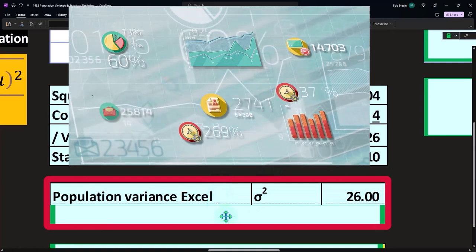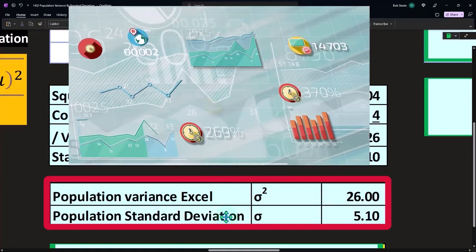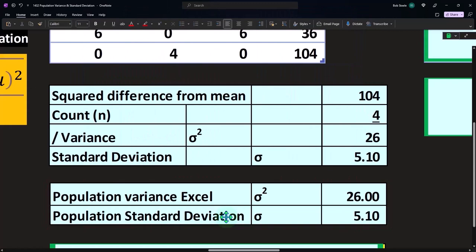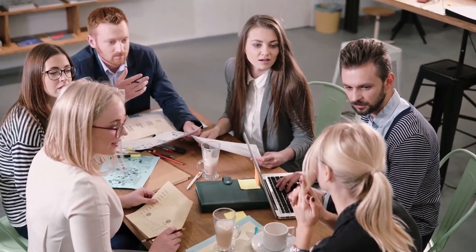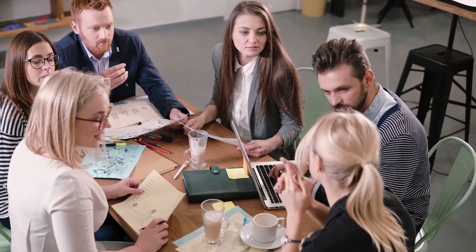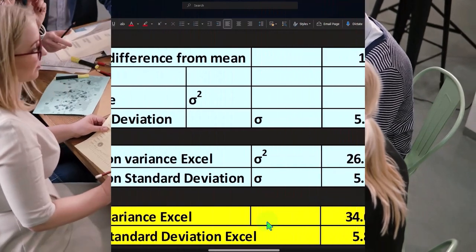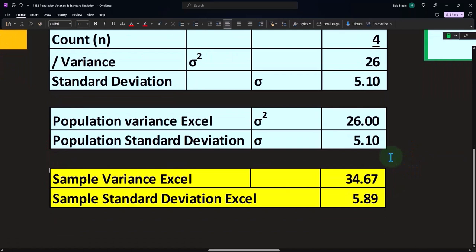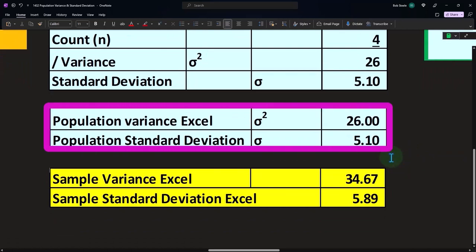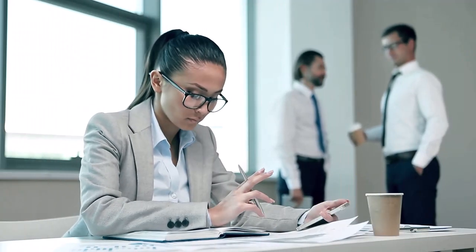We'll talk about those differences more in future presentations - sample versus the entire population. Excel can also calculate these using formulas. This one is calculated using the Excel formula for the variance and standard deviation for the population. These two are using Excel formulas to calculate for the sample. Again, we'll talk about the sample more in a future presentation.